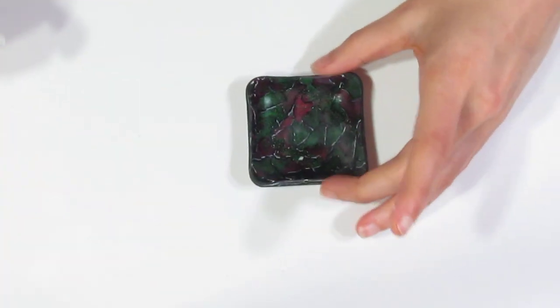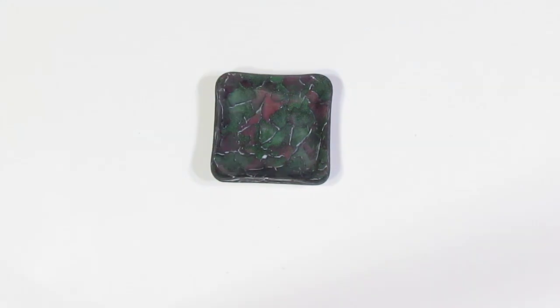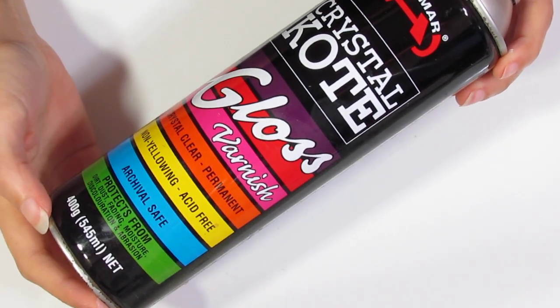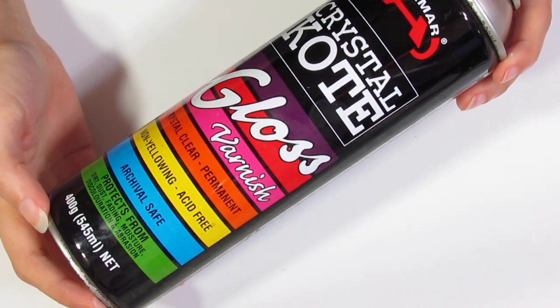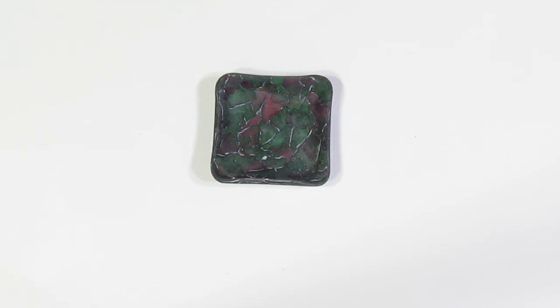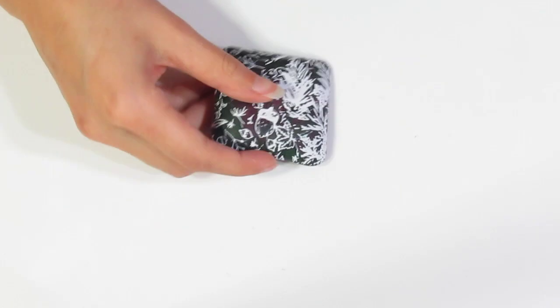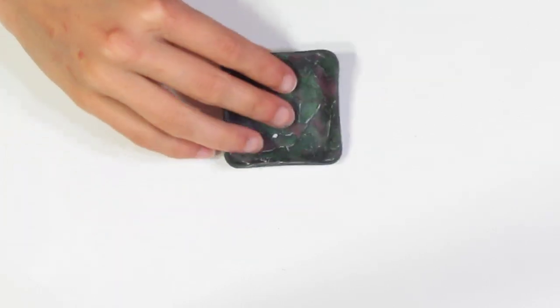Now we can varnish it. Okay, and I'm going to be using a spray-on varnish. You can of course coat it in Varathane or UV resin. This is just very easy. I'm going to spray the front first. Let that dry for about an hour. Then flip and I'll spray the back.